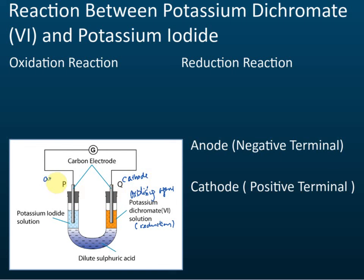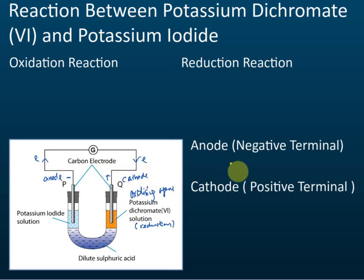Since Q is the cathode, is Q the positive or negative terminal? Q is the positive terminal, because the cathode is always the positive terminal in a voltaic cell. Therefore P is the anode — negative terminal. This means electrons transfer from P to Q. P is the anode electrode and Q is the cathode.